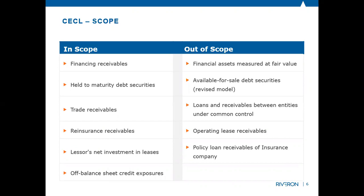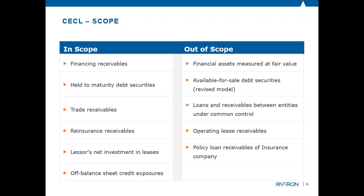So what's in scope for CECL? Typical things in scope include financing receivables or loans — that's really getting the focus — as well as held-to-maturity securities, which won't impact as many organizations but do have a credit component. Trade receivables are another focus today, as entities outside of financial services industries will have those come into scope. And then some other things people are less familiar with, like reinsurance receivables, leases, and off-balance-sheet credit exposures.